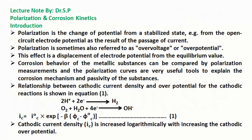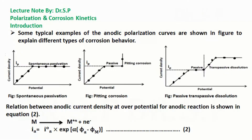The relationship between cathodic current density and overpotential for cathodic reactions is shown in Equation 1. Cathodic current density is increased logarithmically with increasing cathodic overpotential. Some typical examples of anodic polarization curves are shown in a figure to explain different types of corrosion behavior.